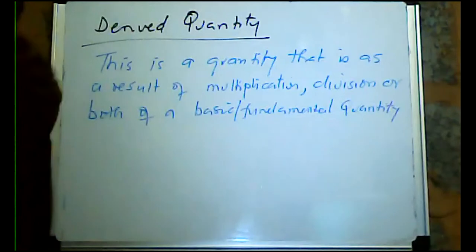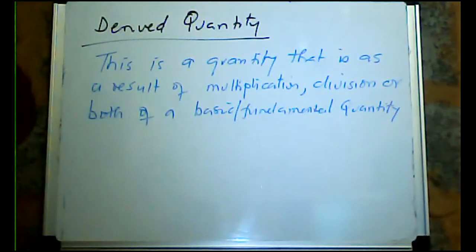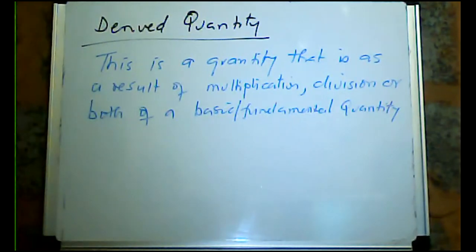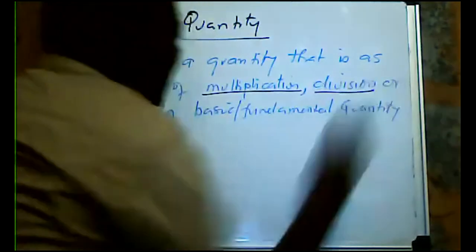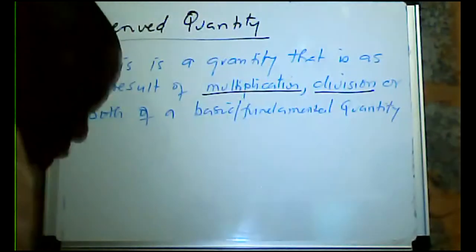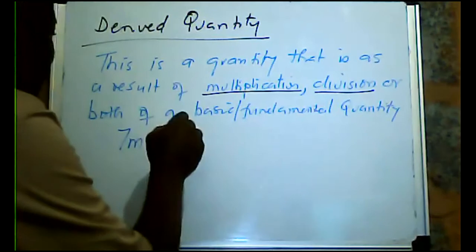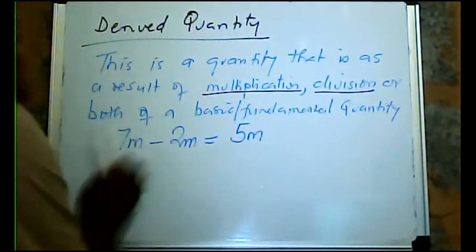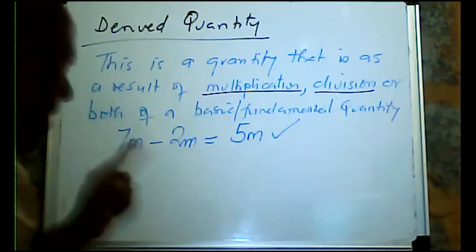What we are simply saying is that from the seven fundamental quantities, when you multiply or divide, or both, then what you get is a derived quantity. The key word is multiplication and division — not addition or subtraction. If you have seven meters minus two meters, the answer is five meters: a basic quantity minus a basic quantity still gives a basic quantity.